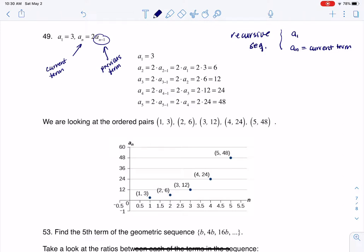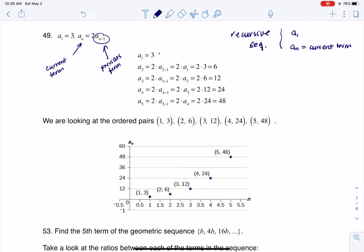Just depending on the type of problem, we only have the previous term. So if I want the first five terms in the sequence, I can see I start with a sub 1 being 3, now for a sub 2.